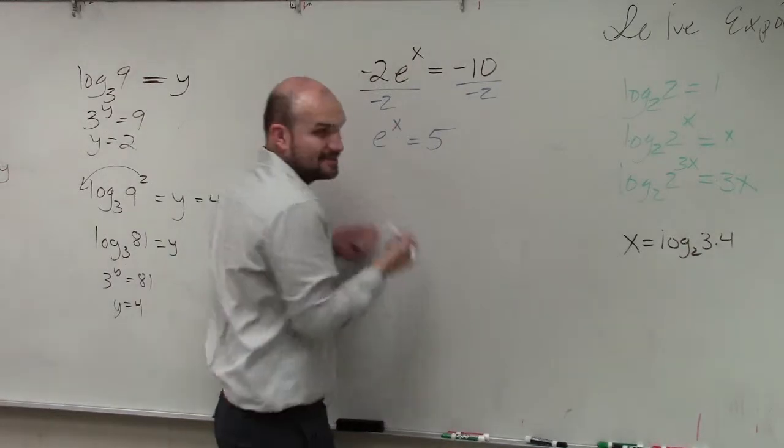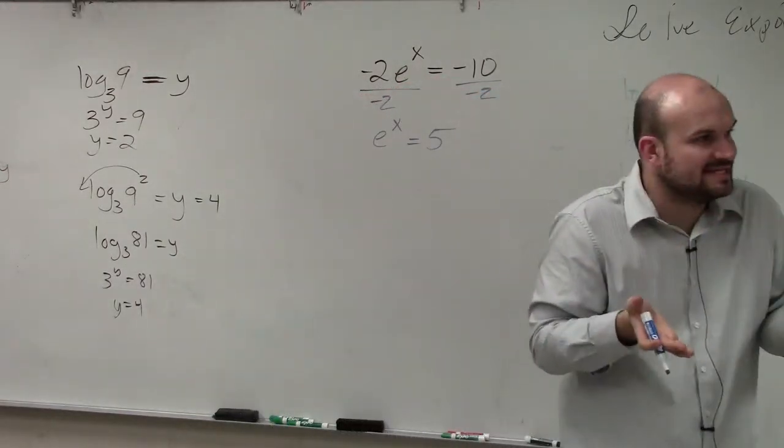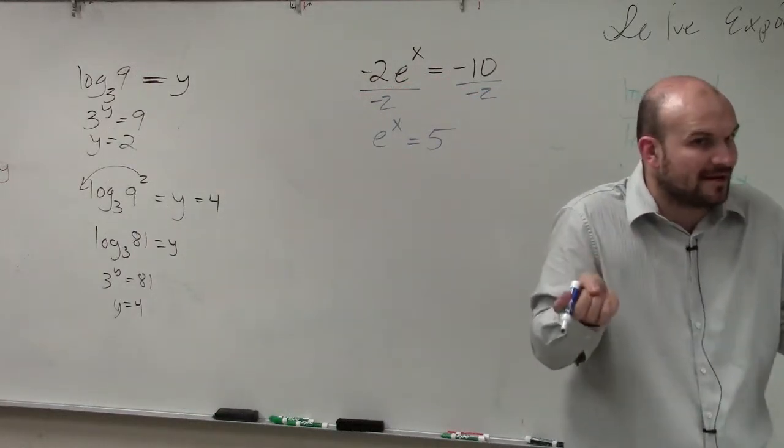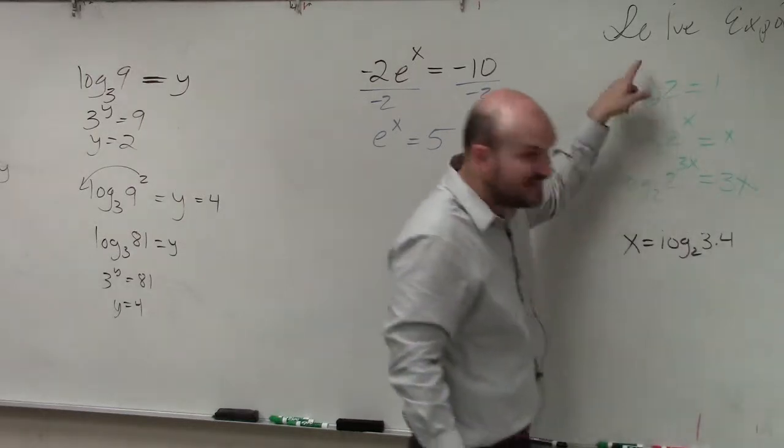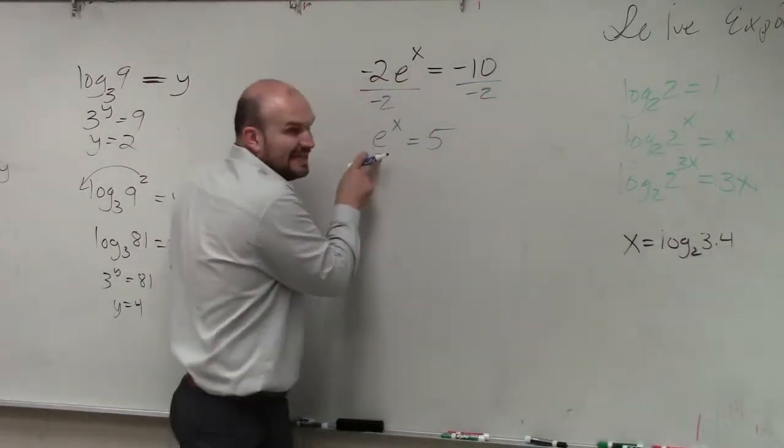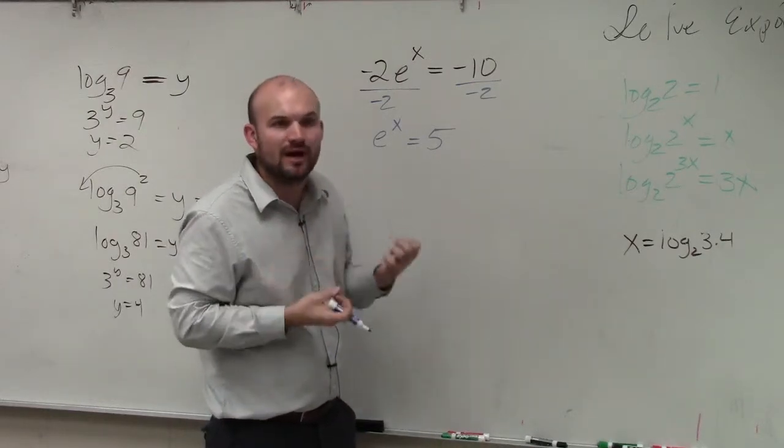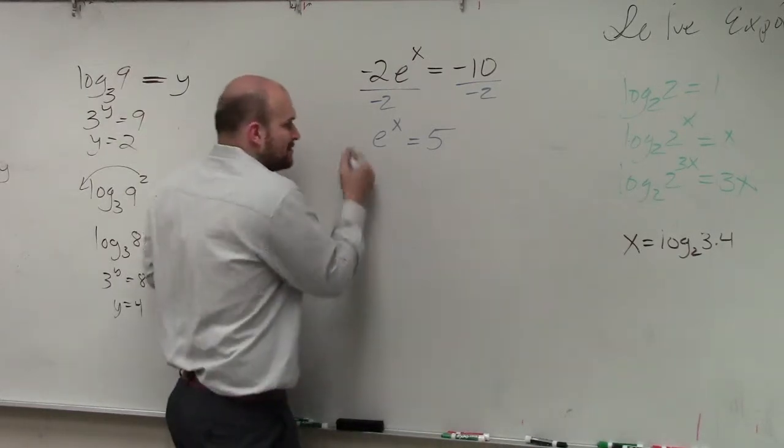Now again, we're trying to solve for x, right? But in this case, when we're trying to solve for x, we need to get that off the bottom. So I need to get rid of that e base. So using this thinking, I have my base as e. So therefore, I'm going to have to take the log of base what? e, which is natural log.